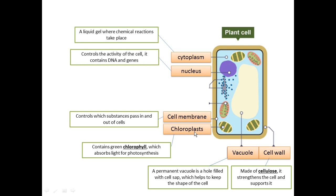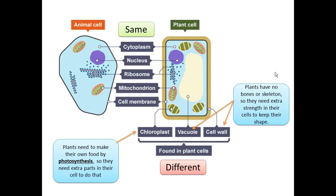Now let's look at the three organelles found only in plant cells. First, the chloroplast — it is a green organelle because it contains a green pigment, and it is important for photosynthesis, a process that happens only in plant cells. Then there is the vacuole, which functions as storage for food and also maintains the shape of the plant cell. Finally, the cell wall is a thicker layer around the cell that gives strength and keeps the shape.